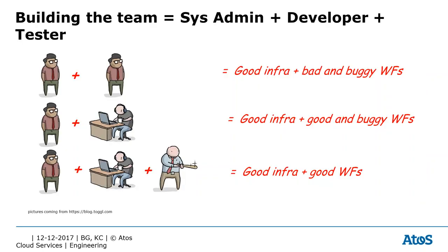Now let's understand how to build your dream team. In most infrastructure organizations the majority of people are sysadmins. When you start your journey you can develop and design good infrastructure, but when it comes to writing workflows in VRO the code might not be ideal — sysadmins write scripts but are not true developers. Introducing a developer to your team brings good development practices, but you can still have bugs that aren't spotted. So we recommend building a team of sysadmins or architects, plus a developer, plus a tester — resulting in good infrastructure and good bug-free code.